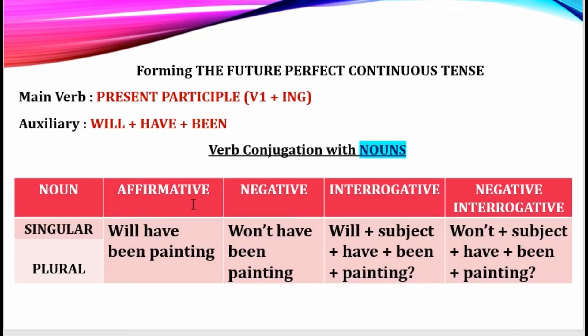Now, forming the future perfect continuous tense: its main verb is the present participle — that is V1 plus -ing — and its auxiliary is 'will have been.' Whenever you use the future perfect continuous tense, you have to use 'will have been' along with V1 plus -ing. It's so simple. It seems really strange because the future perfect tense and future perfect continuous tense are very rarely used in our day-to-day communication.